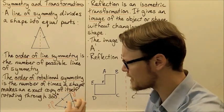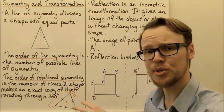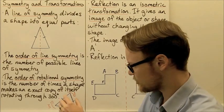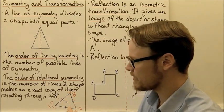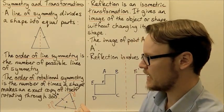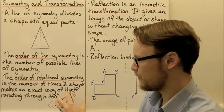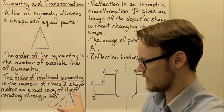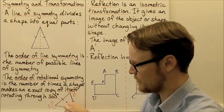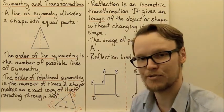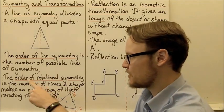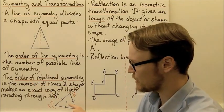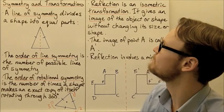I could do that another two times until I got back to the start. So there are three different possible rotational symmetries with this equilateral triangle. The order of rotational symmetry for the equilateral triangle is also three.